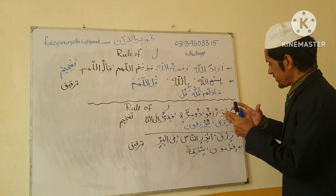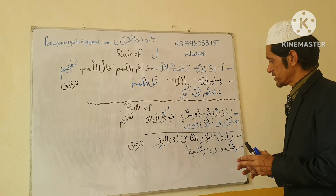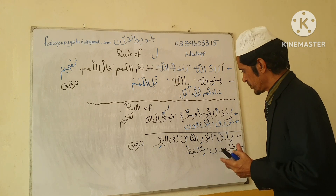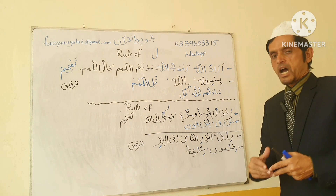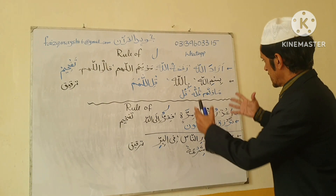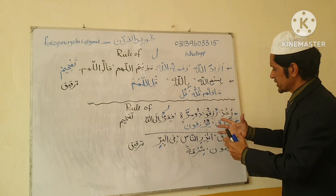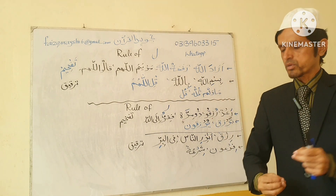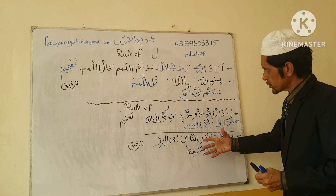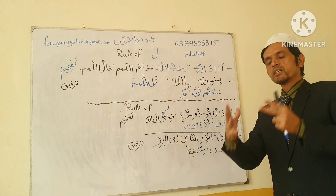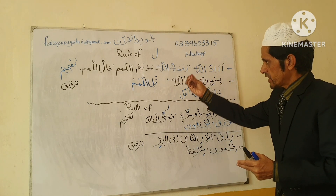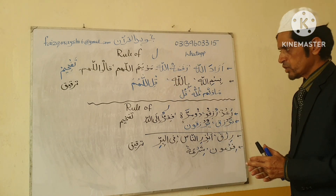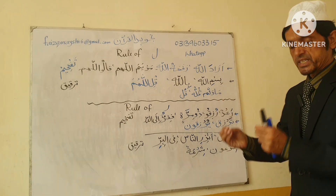There are also a number of other positions and conditions for Ra, but they need more detail. As a normal reader, these four conditions are enough for you to learn. So whenever you read the Holy Quran and these conditions come to you, you will read Allah with Tafkhim or Tarqeeq, and Ra with Tafkhim or Tarqeeq. These are Sifat-i-Arza — temporary characteristics.